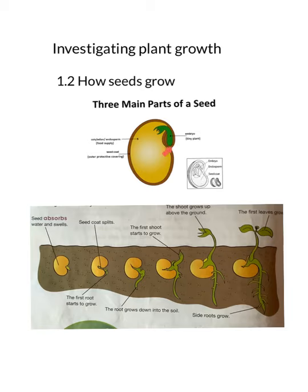The seed will start growing only when it receives the required conditions. When a seed is sown in the soil and it receives enough water to swell up, it starts germinating. Germination is a process where the tiny embryo inside the seed starts to grow using the food store from the cotyledon, which supplies enough energy for the embryo to grow into a new plant.